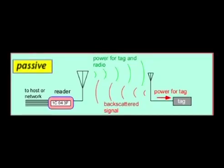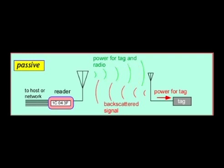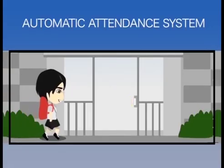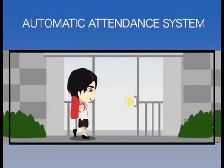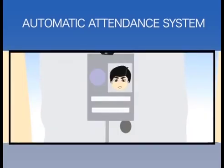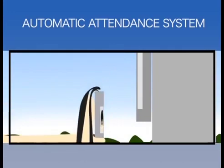A passive tag has no battery. Instead, it draws power from the reader, which sends out electromagnetic waves that induce a current in the tag's antenna. It is used for short communication ranges up to 10 meters, like tags for proximity cards used in automatic attendance systems.